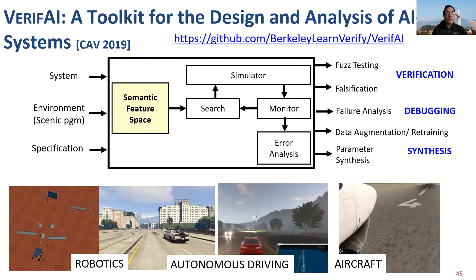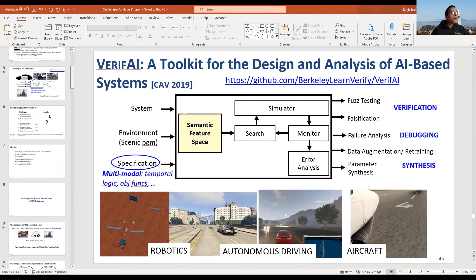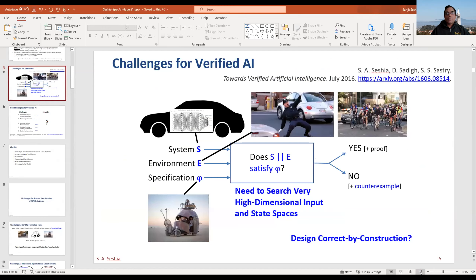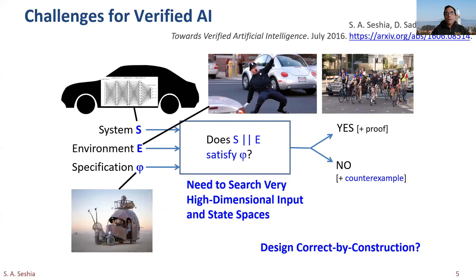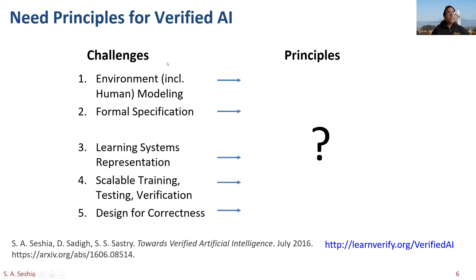Even correct-by-construction synthesis requires a lot more work in this field. So the five challenges we put forth are: environment modeling including human behavior, formal specification, modeling learning systems for the purposes of formal reasoning, scaling up algorithms for design and verification, and doing design for correctness. In that paper we also listed a bunch of principles which we've refined over the years, and the work we've done on this topic is listed at our URL.